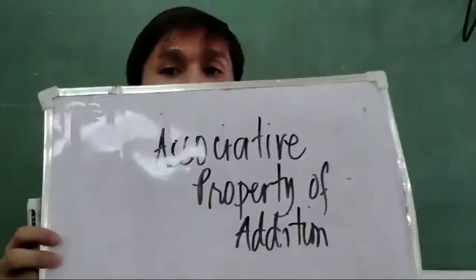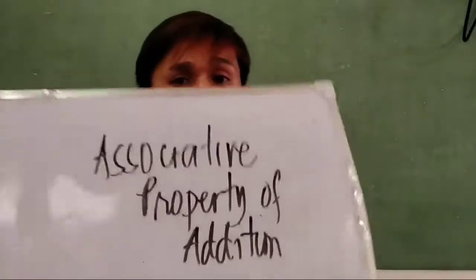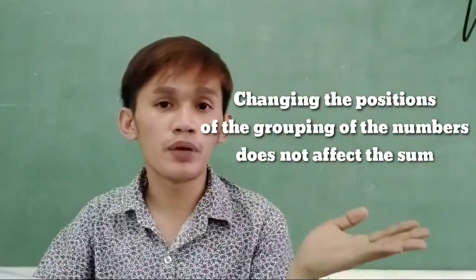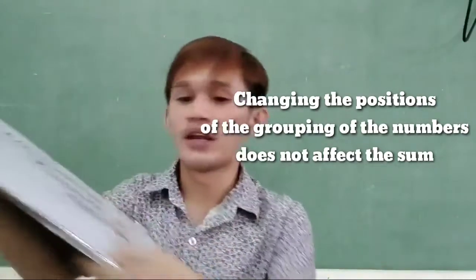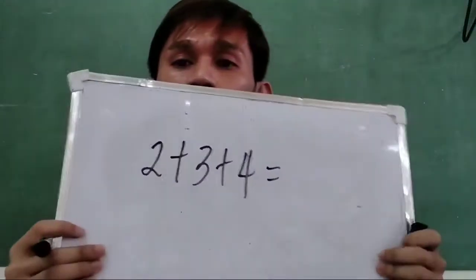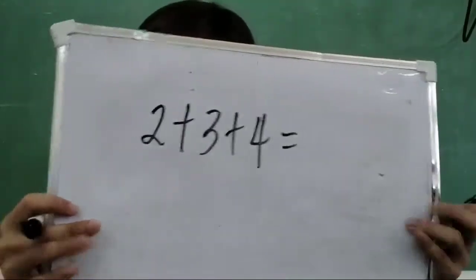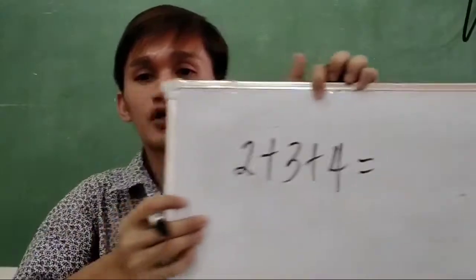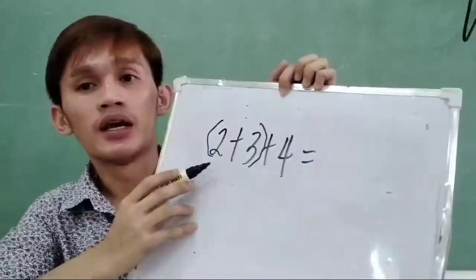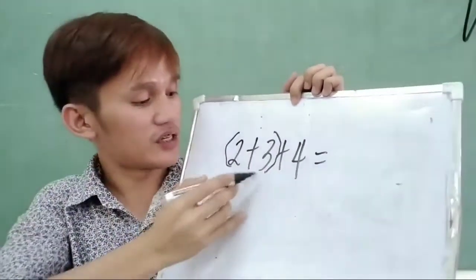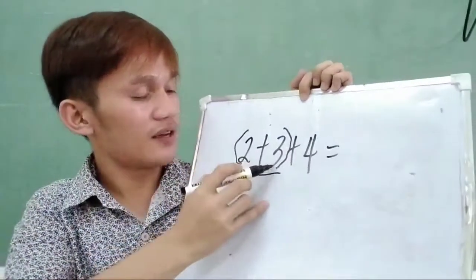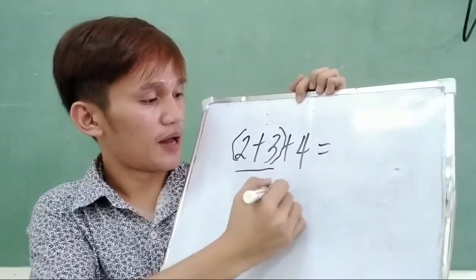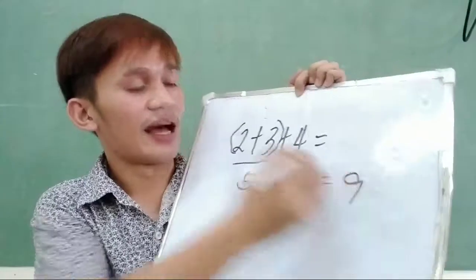The third property is the associative property. Associative property states that changing the groupings of the numbers does not affect the sum. So let us have an example. Suppose that we have 2 plus 3 plus 4. So according to associative property, changing the grouping — the first thing we are going to do is group these numbers. So let us try to group 2 and 3. That will be the quantity of (2 plus 3) plus 4. So 2 plus 3 is 5, plus 4, and 5 plus 4 is 9.